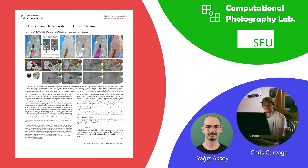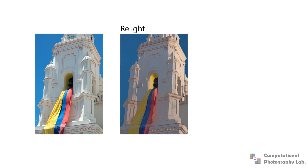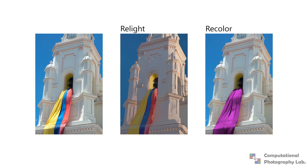Intrinsic decomposition aims to separate the effects of illumination from surface colors in an image. In this representation, the image is decomposed into shading, which encodes the illumination, and albedo, or reflectance. The intrinsics open a wide range of editing implications, such as relighting and recoloring.